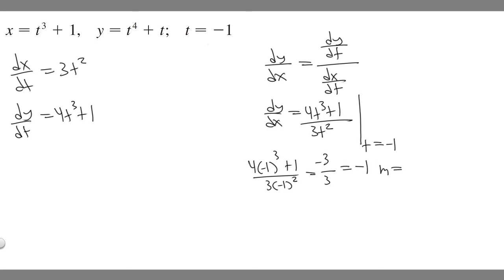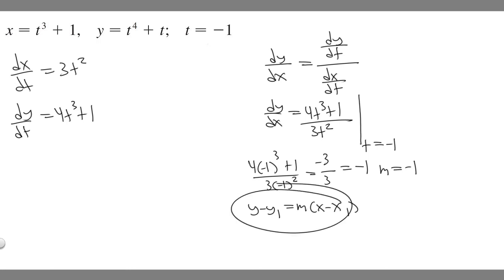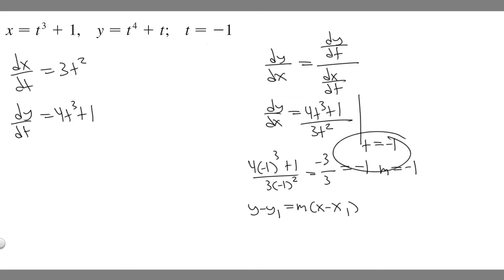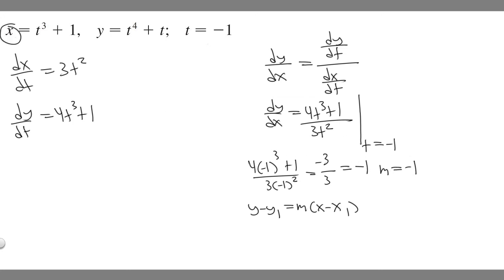So m equals minus 1. Now, remember from Calc 1, we're going to use the point-slope formula: y minus y₁ equals m times x minus x₁. We have m, but we need y₁ and x₁. We need to find those at t equals minus 1, so we plug our t value into the parametric equations to get the x and y coordinates at that point.